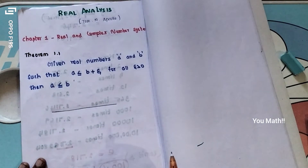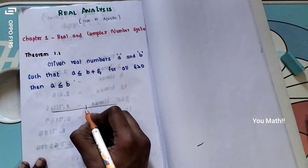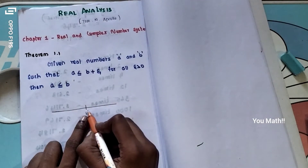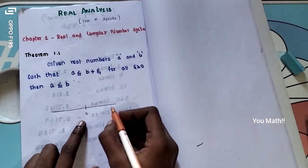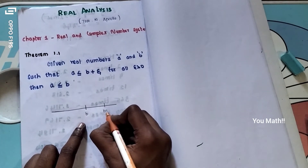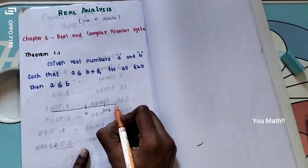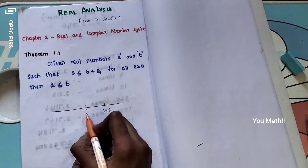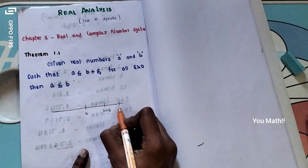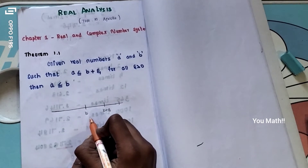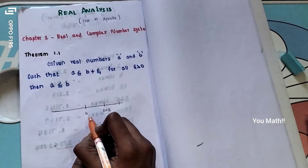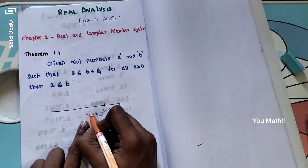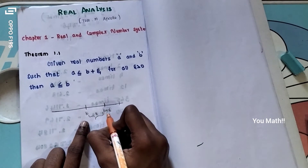I will draw the real line. In the real line, I will mark the point b. Then I will mark the point b plus epsilon. This is epsilon distance from b. So b plus epsilon is marked to the right of b.